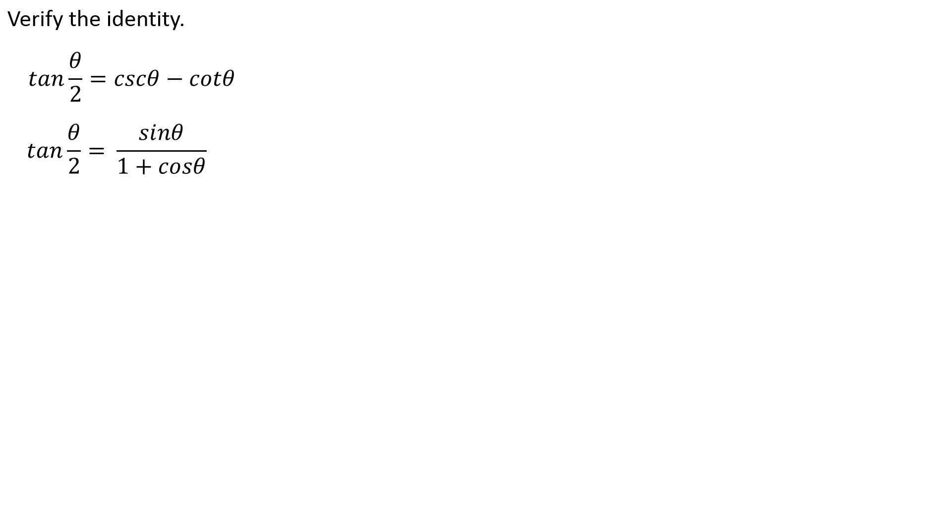But I just have plain old sine θ, plain old cosine θ. So I'm going to multiply the fraction by the number 1, but disguise the number 1 using the conjugate of the denominator. Right? We're pulling that old algebra trick out of the hat here. The conjugate of 1 plus cosine θ is 1 minus cosine θ.